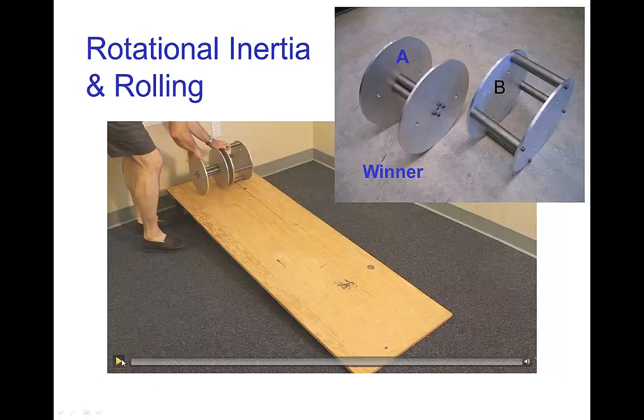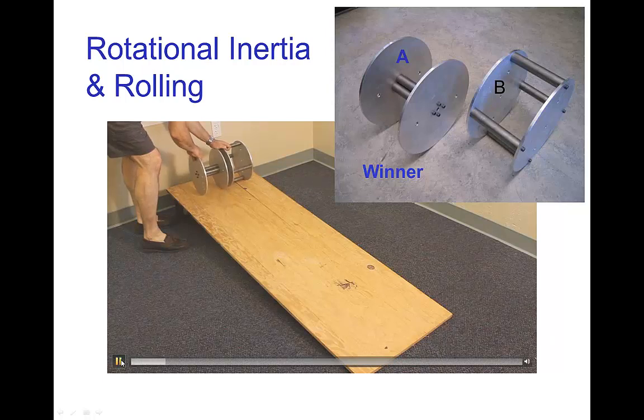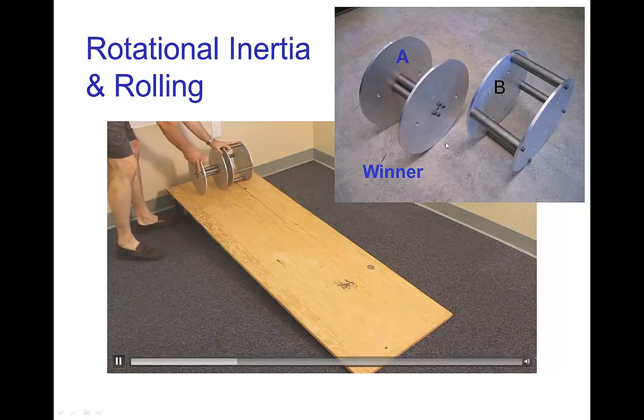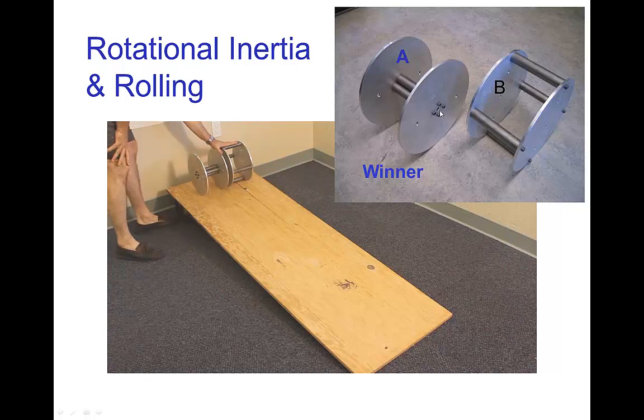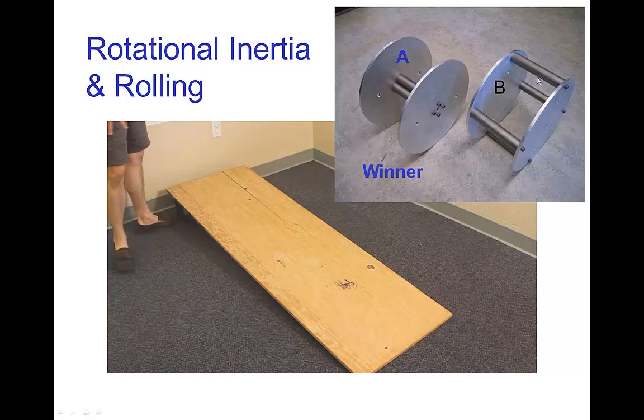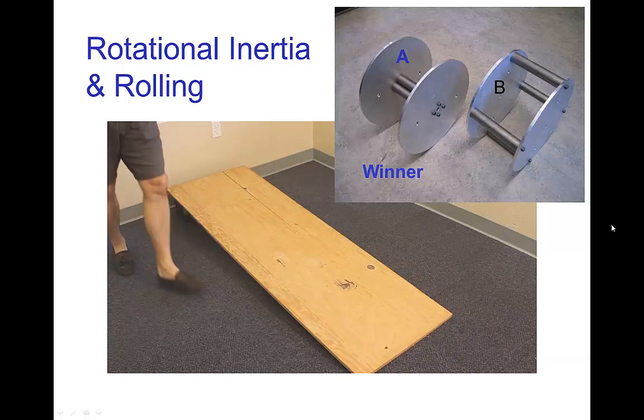Well, here's the answer. The smaller rotational inertia is the wheel that has the mass near the center. There you see it. The other wheel has a larger rotational inertia.